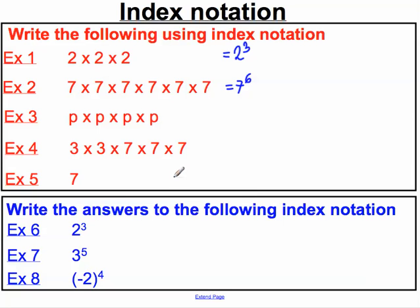We can also use index notation when dealing with algebraic expressions, not just numbers. Our base here is the algebraic expression p. We are multiplying p, the base, by itself four times. So that gives us p to the power of four.